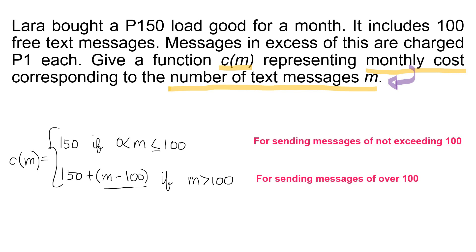Let's have an example. Say Lara sent 105 messages. What is her monthly cost? Since m equals 105, we use the second formula: 150 plus 105 minus 100 equals 150 plus 5, which equals 155. So her monthly cost is 155 pesos if she sent 105 messages.